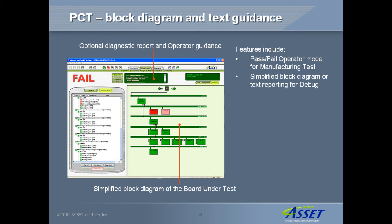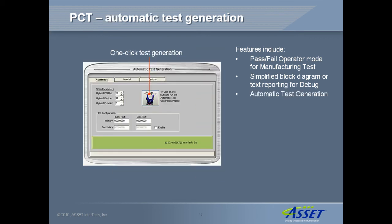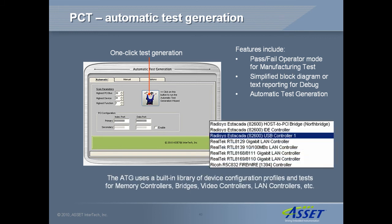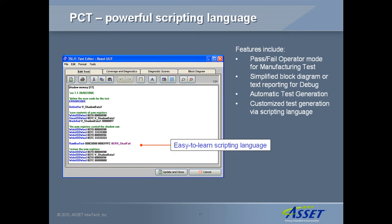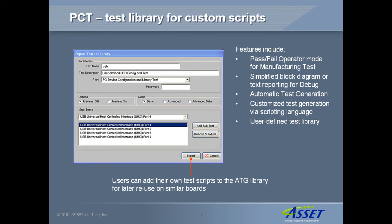There are two modes of developing tests for a specific board. For standard architecture boards, there is an automatic test generator which interrogates a known good board to discover its components, and then creates a test program with the aid of a built-in device description library. For non-standard architecture boards, the ATG can be used in manual mode, and an easy-to-learn scripting language is provided to modify or create test scripts. Individual commands in this language perform many low-level functions, making it very easy to generate a test program for a specific board. Tests generated by the ATG use the same scripting language, so they can be edited or modified by the developer. Tests developed by users can be exported into a library for easy reuse on other boards that carry the same components.